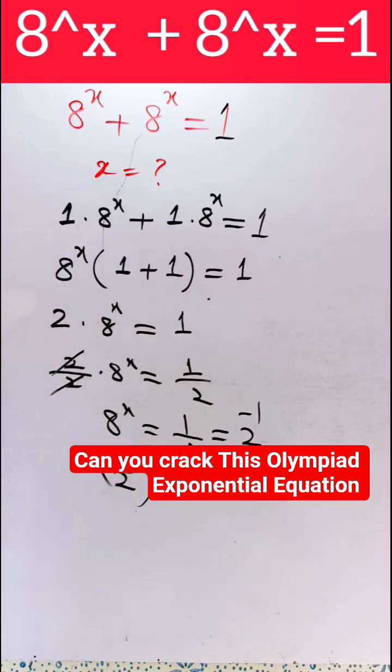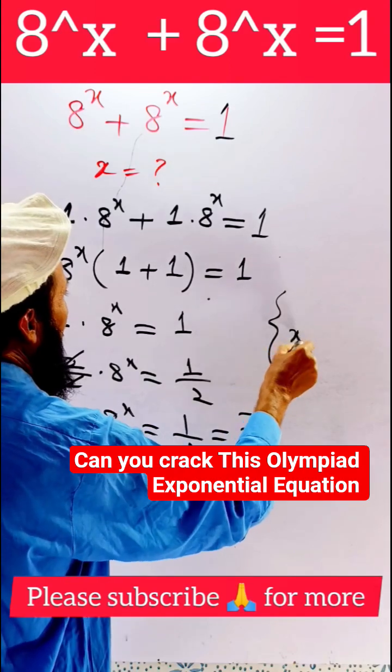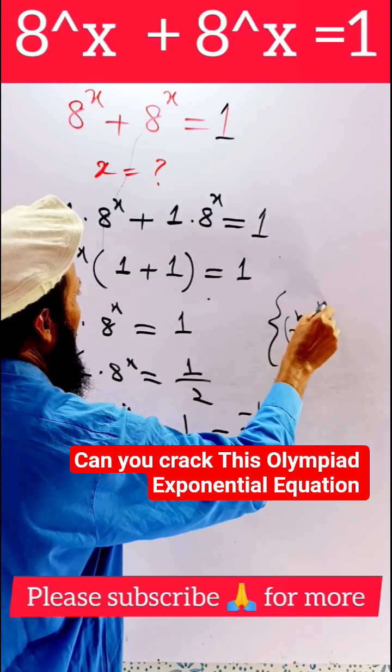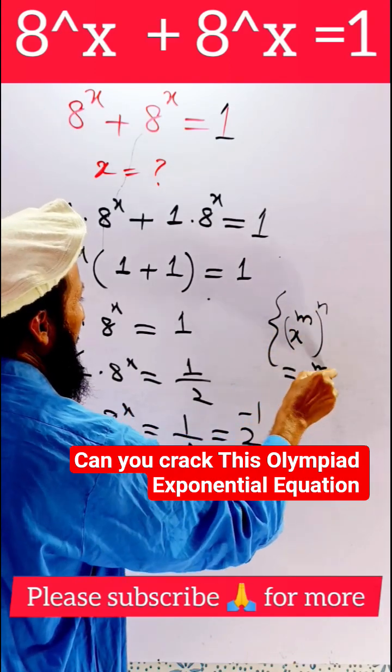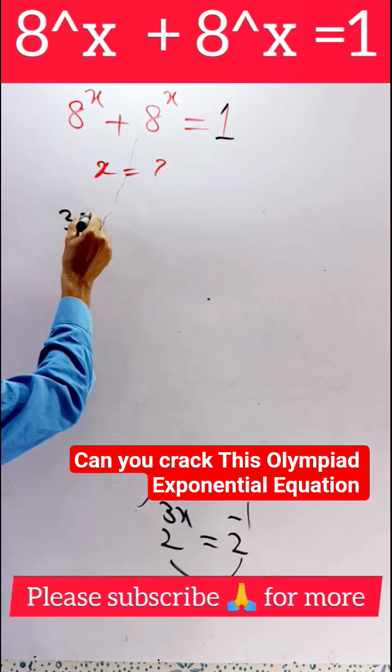According to the double exponent rule, (x^m)^n = x^(mn). According to this rule we multiply the exponents: 3x = -1.